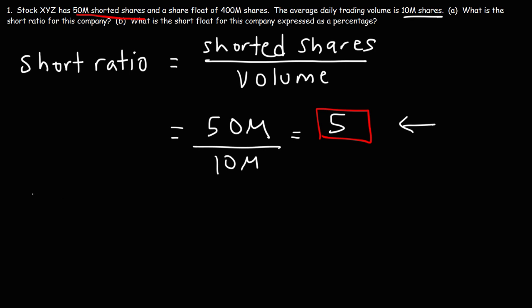If the stock is going down, that means the short sellers are selling stock, driving the price down. And if the stock decides to go up, the short sellers want to buy back their stock. But with an average daily trading volume of 10 million shares, on average it will take them 5 days to buy back their shares. That's what the short ratio tells you — how many days it will take short sellers to cover their positions.